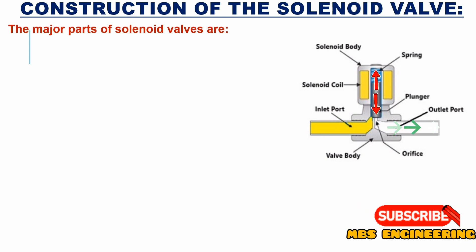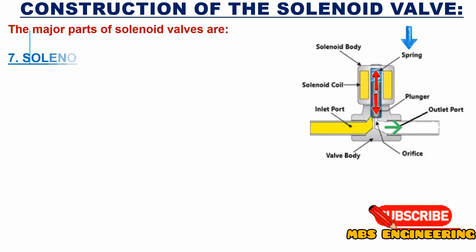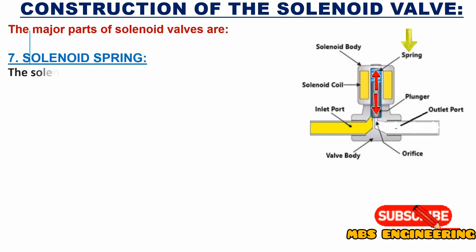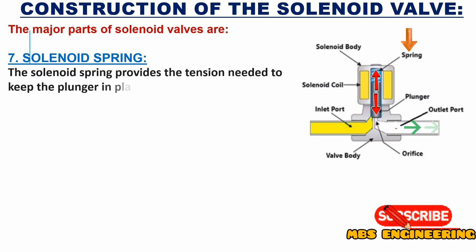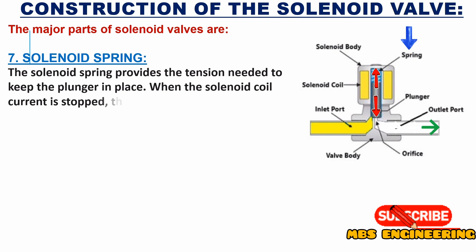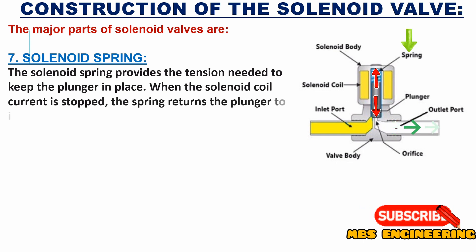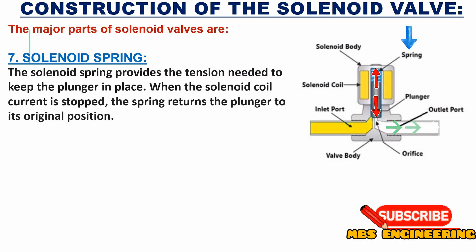The seventh part of the solenoid valve is the solenoid spring. The solenoid spring provides the tension needed to keep the plunger in place. When the solenoid coil current is stopped, the spring returns the plunger to its original position.